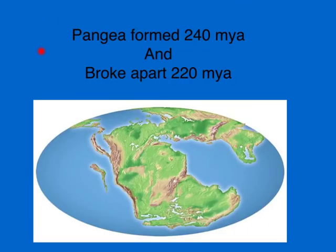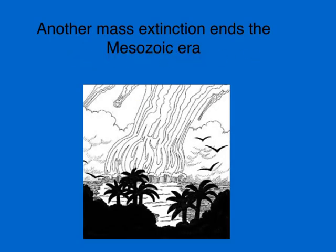During this time, the large land mass called Pangea formed about 240 million years ago, with all the land concentrated in one spot. Then, 220 million years ago, it began to come apart. The Mesozoic Era ended with another mass extinction, probably caused by another asteroid, or perhaps a combination of climate change and volcanoes. After this mass extinction, that was the end of the dinosaurs.